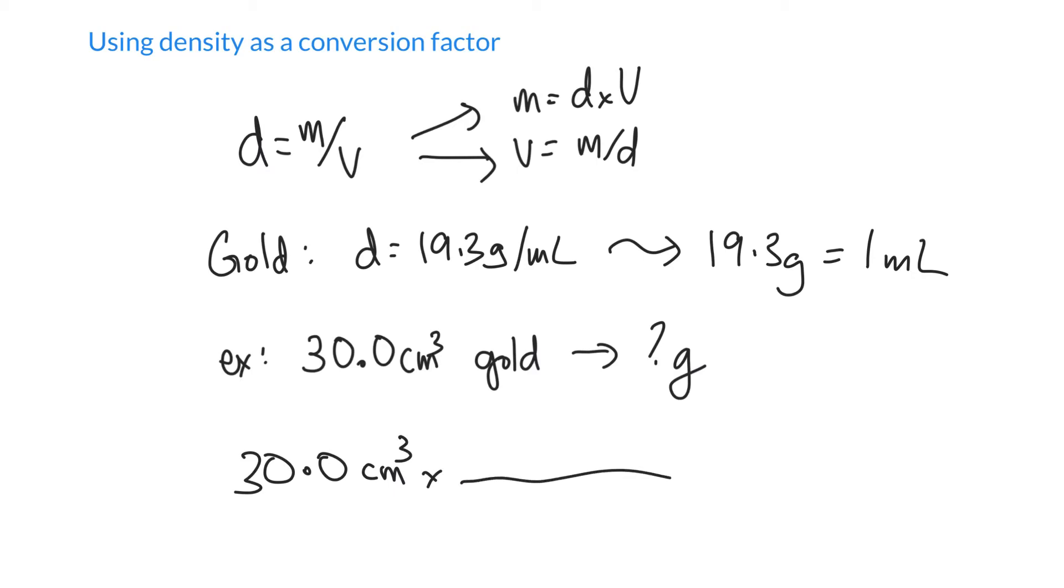And all we're going to do is put the units that we want to get rid of on the bottom and the units we want to keep on the top. So we've got 19.3 grams. We want to end up with grams. And we've got one milliliter, which, if you remember, is exactly the same as one centimeter cubed. So I'm going to write one centimeter cubed. And on the top, I'm going to write 19.3 grams.